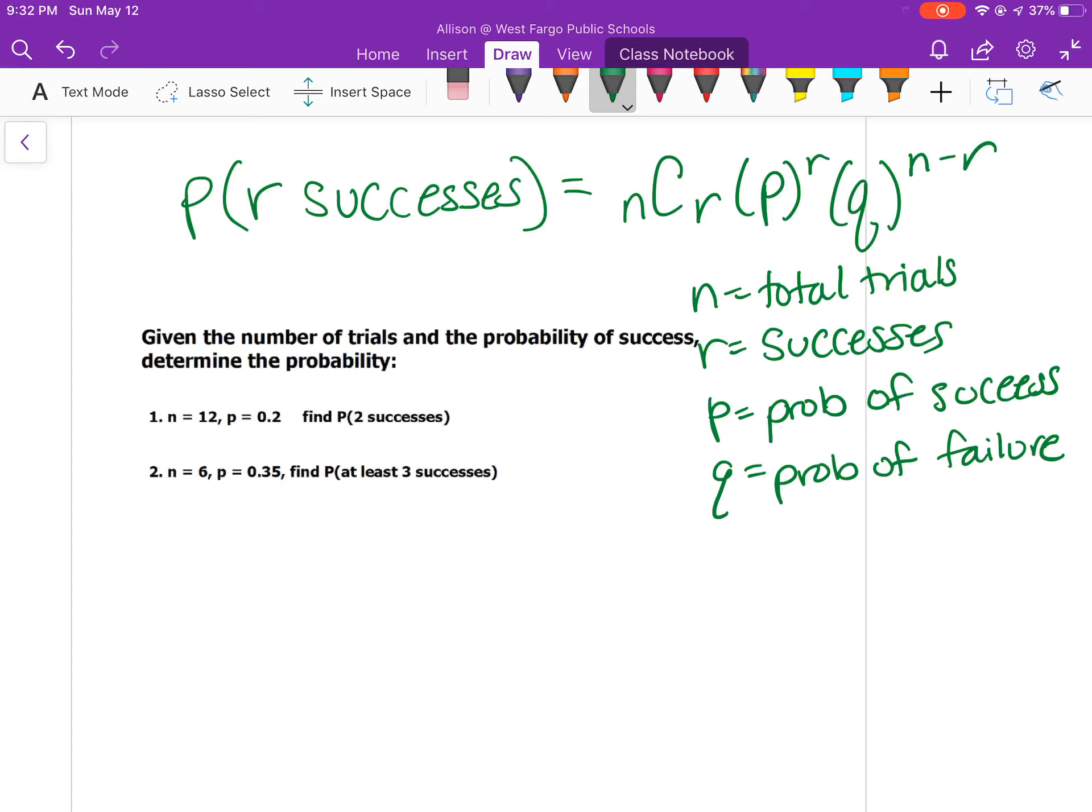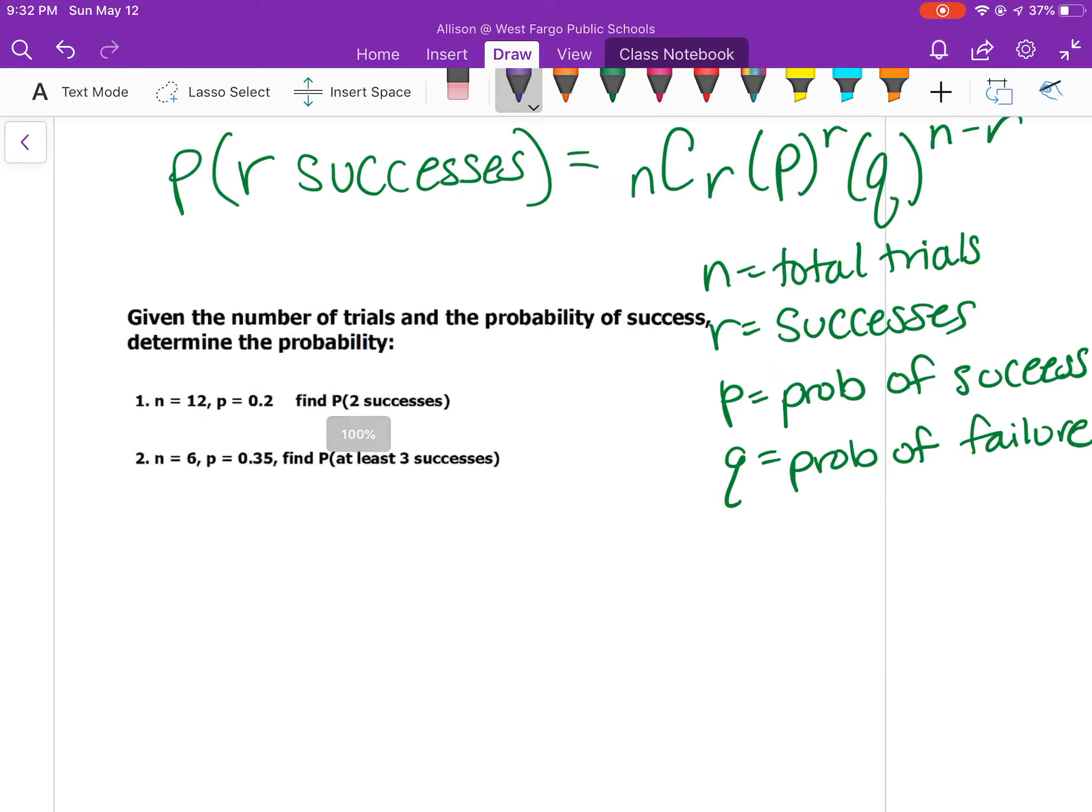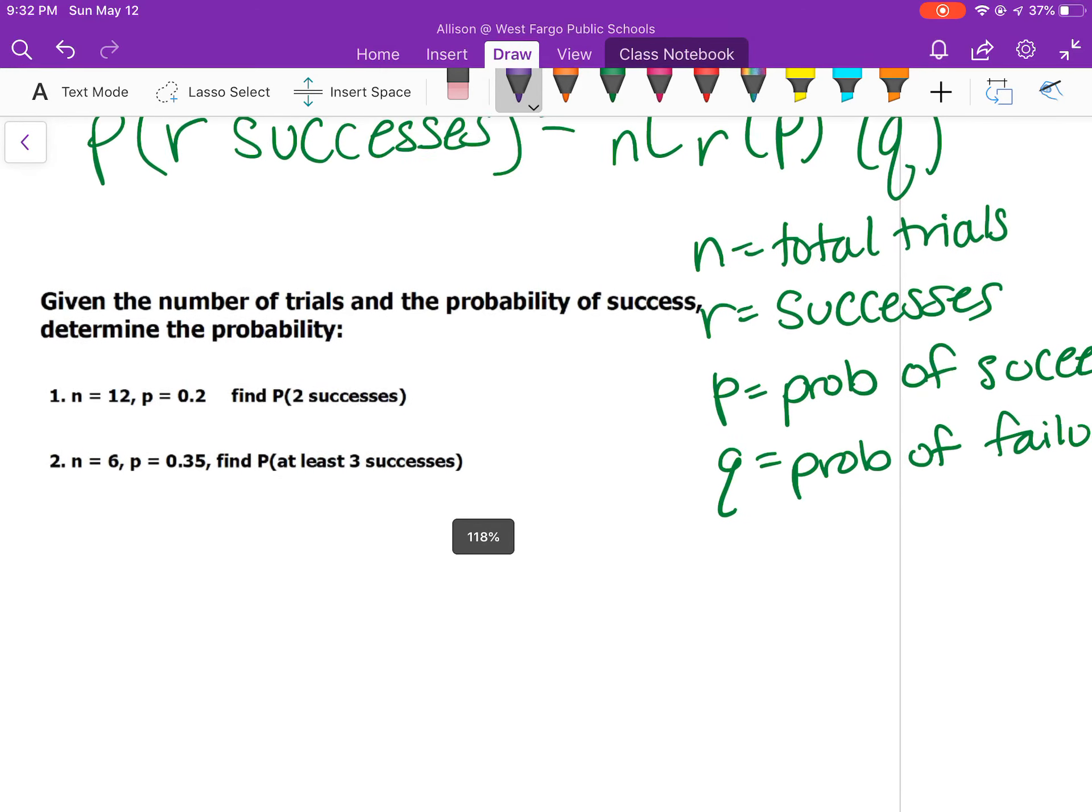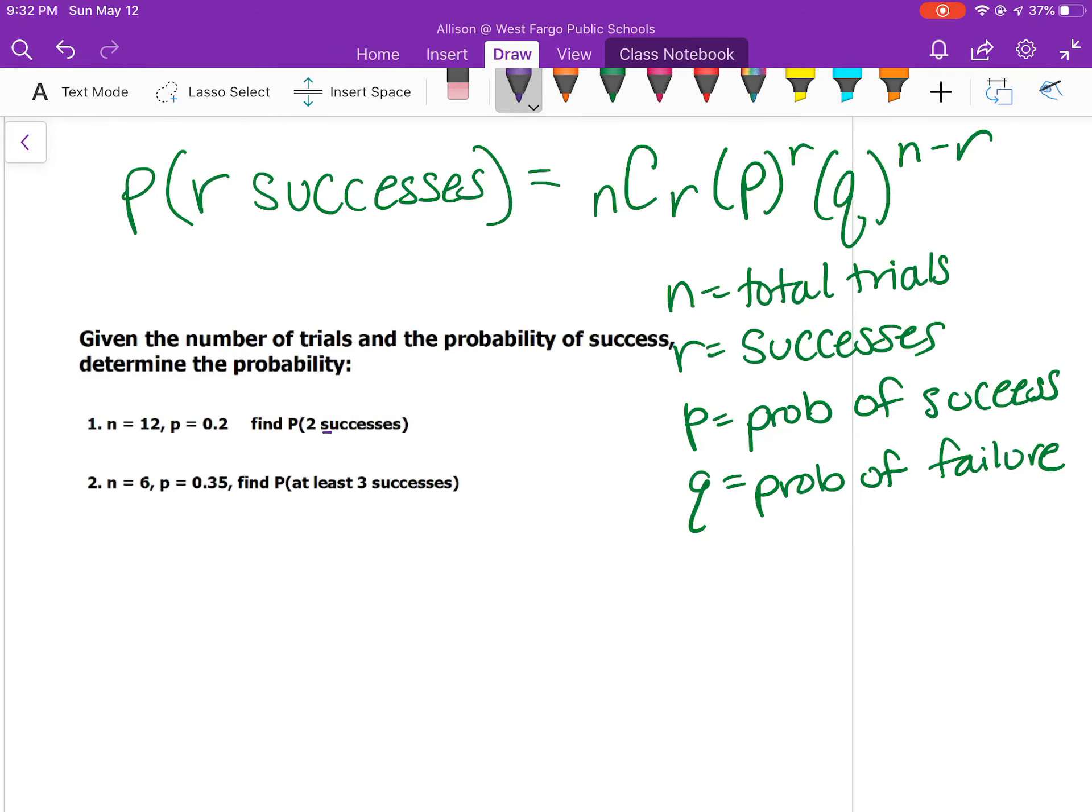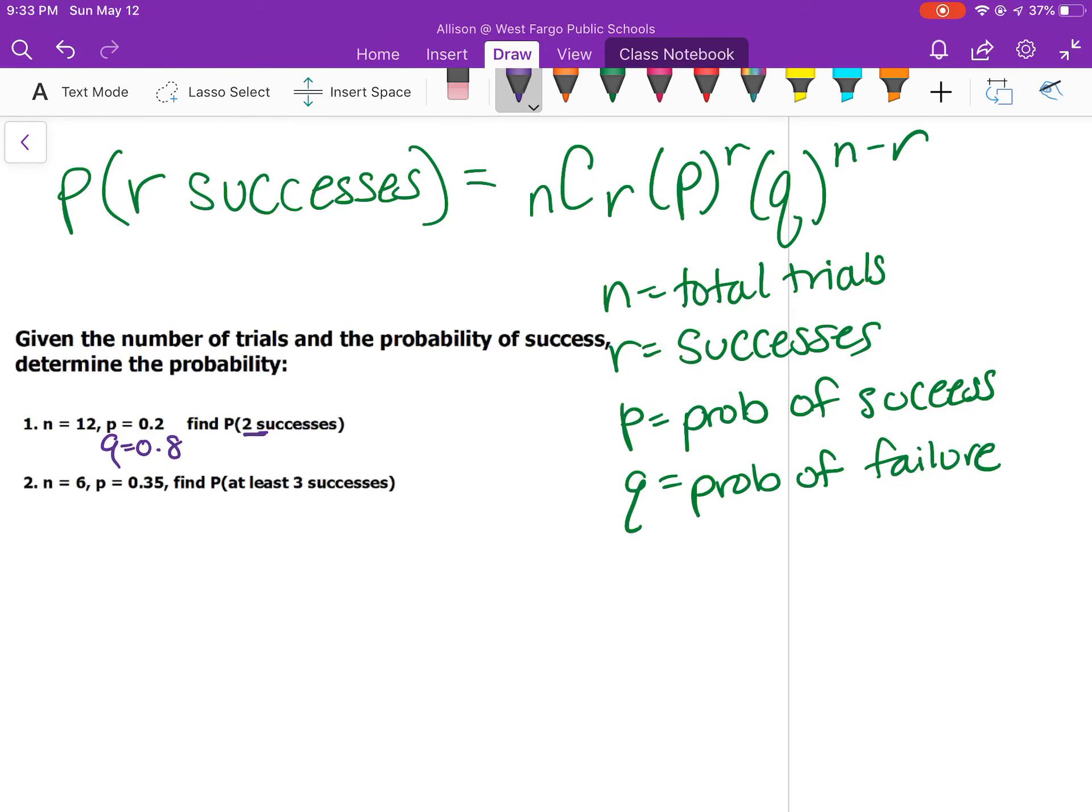The first two are just setting up the equation. If I have N total trials and I want two successes, P of 2, and if my P equals 0.2, then my Q would be 0.8. So 20% success rate, 80% failure rate. Then it would be N combinations of R, so 12 choose 2 times 0.2 to the second, then 0.8. If I have 2 out of 12 that are successful, then 10 are unsuccessful. Remember that these two will always add back up to your front number.